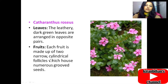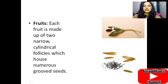Regarding the fruits, each fruit is made up of two narrow cylindrical follicles which house numerous seeds. As you can see in this picture, there are two pairs of narrow cylindrical follicles, and within these follicles the seeds are found.